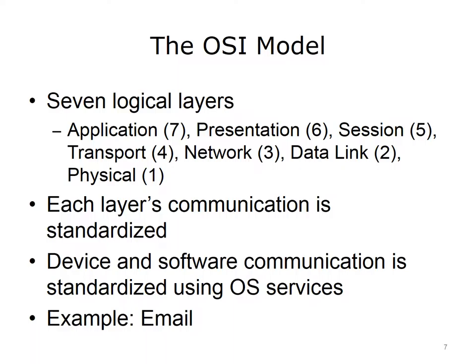Each layer's communication is standardized so that adjacent layers know how to communicate with each other. Layer 7 has the ability to communicate with layer 6; layer 6 can communicate with layer 5 and layer 7; layer 5 can communicate with layer 4 and layer 6, and so on. Therefore, device and software communication is standardized by operating system services. A service is simply a program that starts when the operating system loads. When a computer boots, the boot process loads a number of operating system services. Depending on the device and/or software, one service calls on the functionality of another service to facilitate network functionality and communication.